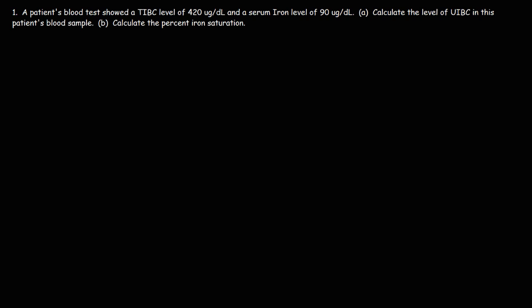Part A, calculate the level of UIBC in this patient's blood sample. The UIBC represents the unsaturated iron binding capacity. To calculate the UIBC level, it's simply the difference between the total iron binding capacity and the amount of iron that's in the blood, the serum iron level.